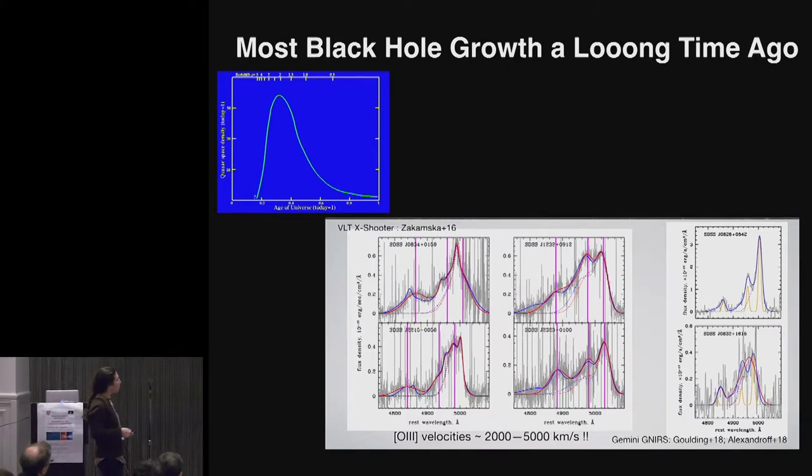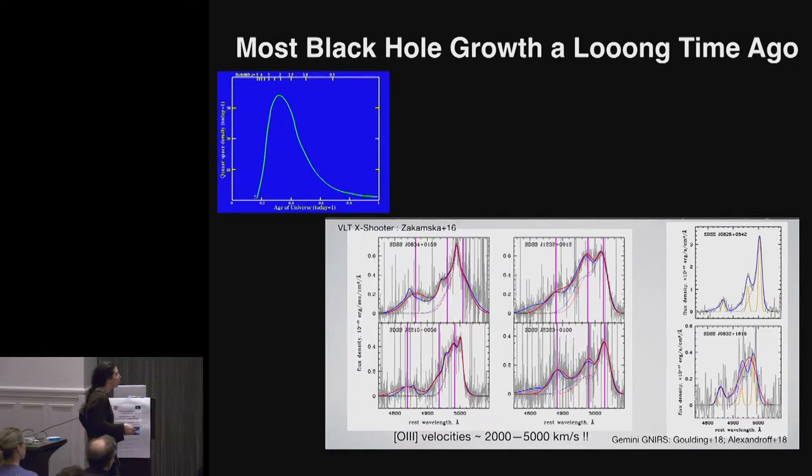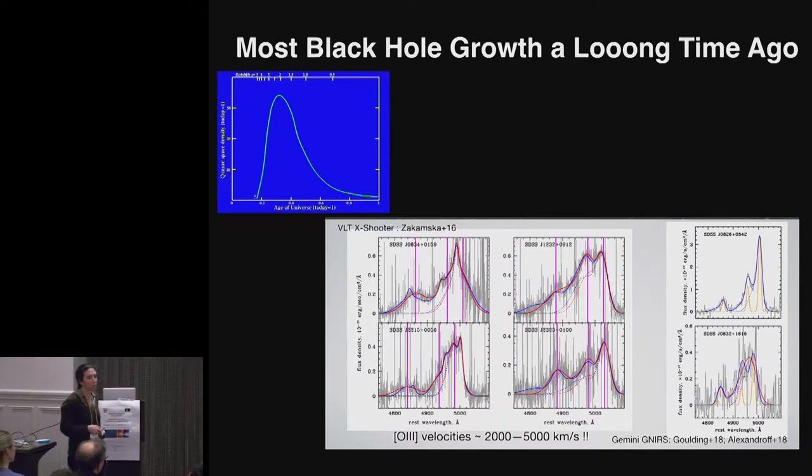And you're again looking at that same oxygen 3 line. It's got two components here. But it's so broad that you can't actually see the individual components.